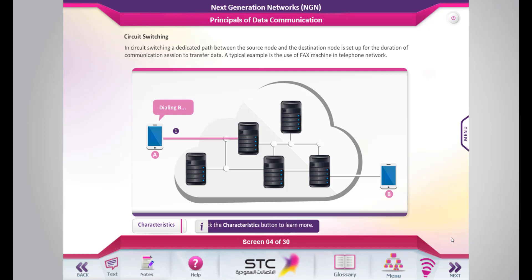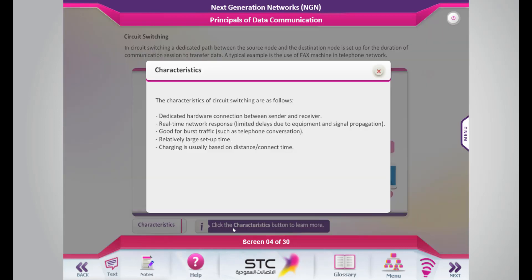In circuit switching, a dedicated path between the source node and the destination node is set up for the duration of the communication session to transfer data. A typical example is the use of a fax machine in a telephone network. Click the Characteristics button to learn more. The characteristics of circuit switching are as follows: dedicated hardware connection between sender and receiver.